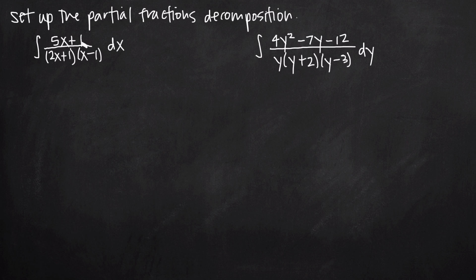Starting here, we notice that we have two linear factors in our denominator. Both of these factors are first degree factors, meaning that the degree of the highest exponent is 1. We have 2x to the first power here, x to the first power, and x to the first power here. So these are first degree variables, which means they're linear factors, and when we have linear factors we know that our partial fractions decomposition is going to include single constants.